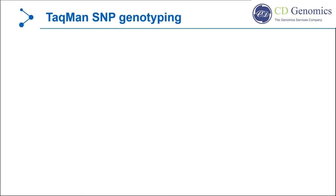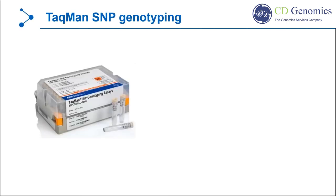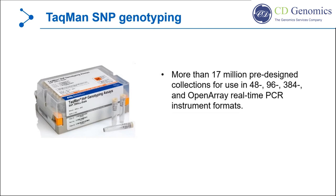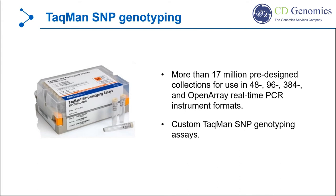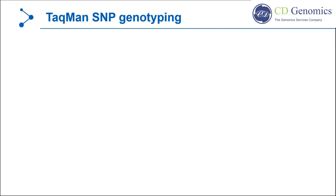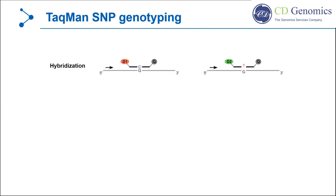TaqMan SNP genotyping provides a fast and simple way to analyze SNP sites. TaqMan SNP genotyping assays now comprise more than 17 million pre-designed collections for use in diverse real-time PCR instrument formats. Researchers can also create custom assays by using the custom TaqMan assay design tool. Each pre-designed collection includes two allele-specific TaqMan MGB probes labeled with distinct fluorescent dyes in a PCR primer pair. They uniquely align with the DNA to offer high specificity for the allele of interest.